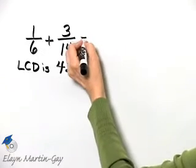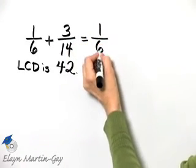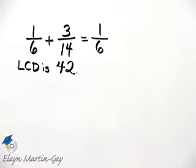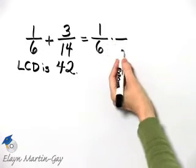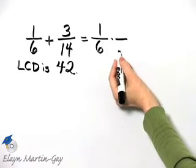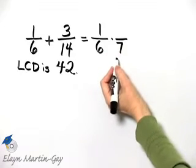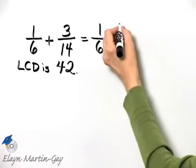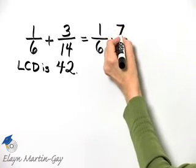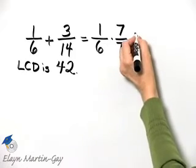I want to now rewrite each fraction as an equivalent fraction but with a denominator of 42. So what do I multiply 6 by in order to have a product of 42? I multiply it by 7. In order for me to be multiplying by 1 then, I must multiply by 7 over 7. And I will do that in just a moment.